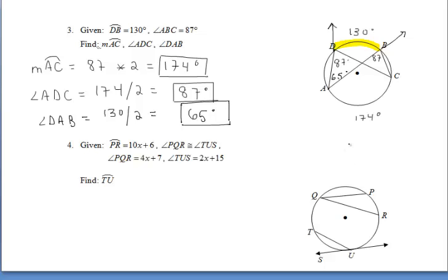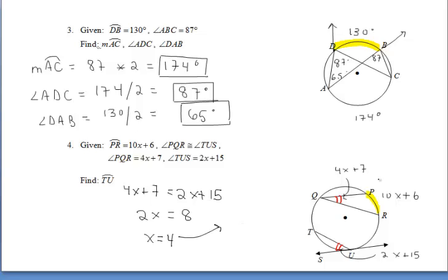And lastly, for number 4, we're given that the measure of arc PR is 10X plus 6. Right away, I'd be thinking about the fact that those two angles, PQR and TUS, are congruent. And we're given some expressions to represent the angles. So, all we have to do is set those expressions equal to each other and solve for the value of X. We get that X is 4,